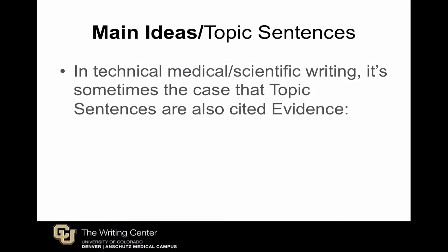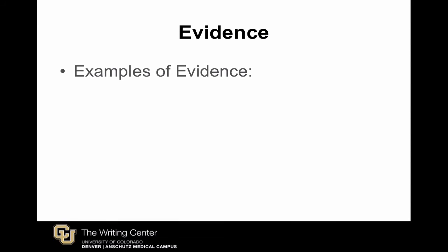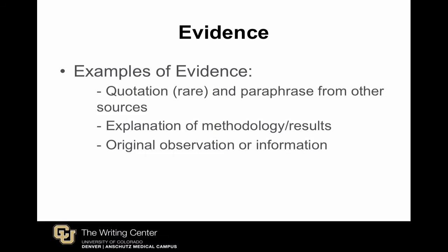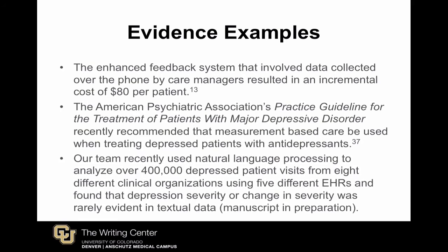Finally, a caveat. In scientific writing, it's often the case that cited source material, or evidence, acts as the main idea or topic sentence for a paragraph. For example, if a sentence is followed by more specific evidence about case management, feedback, and adherence, it could be a great topic sentence for a paragraph. Next up is evidence, which we won't dwell on for too long, except to say that evidence is more than just cited source material. It's explanation of methodologies and original observations — basically information that needs to be analyzed, explained, clarified, interpreted, and put in context.